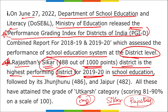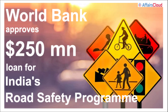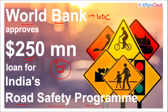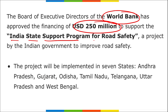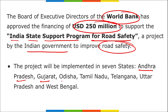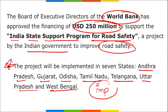The World Bank, headquartered in Washington DC, has recently approved a $250 million loan for India's road safety program. The Board of Executive Directors of the World Bank approved this loan for the India State Support Program for Road Safety — a program launched by the Indian government to improve road safety. The project will be implemented in seven states: Andhra Pradesh, Gujarat, Odisha, Tamil Nadu, Telangana, Uttar Pradesh, and West Bengal.